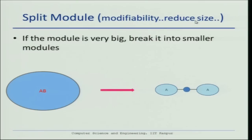If we are talking of modifiability and reduce size is the tactic, it is very simple. Typically, if a module becomes very big, you break it into two smaller modules. If any change is needed, perhaps it is needed only in one part of the module, so it is easier to change.